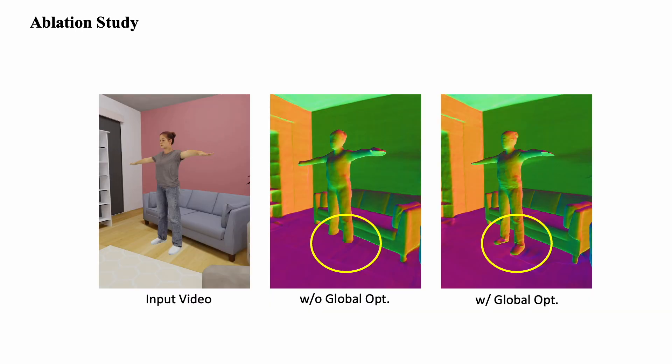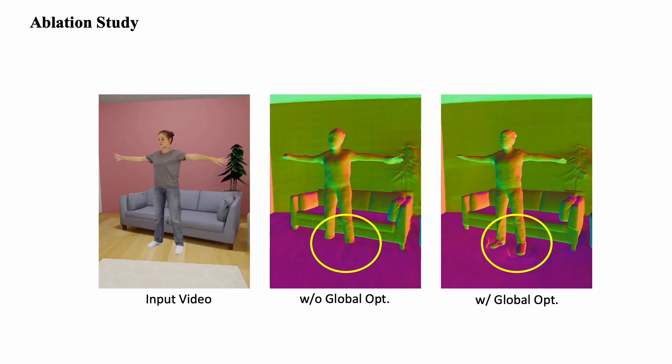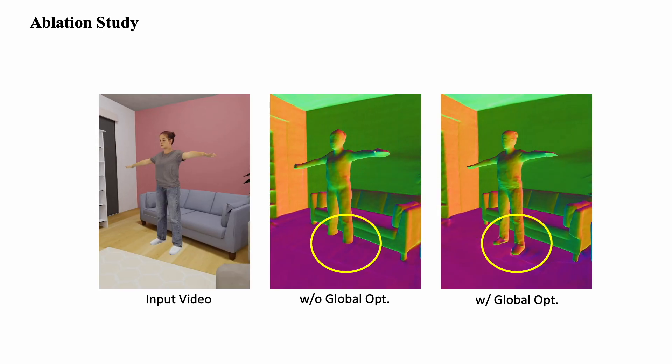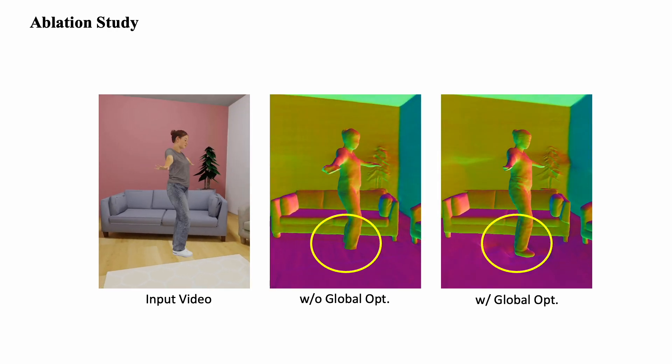In our ablation study, we analyzed the effectiveness of our global optimization strategy by comparing our method with a variant that trains each neural field separately. The video demonstrates how our strategy effectively addresses the issue of human scene interpenetration and produces a physically plausible 3D reconstruction.